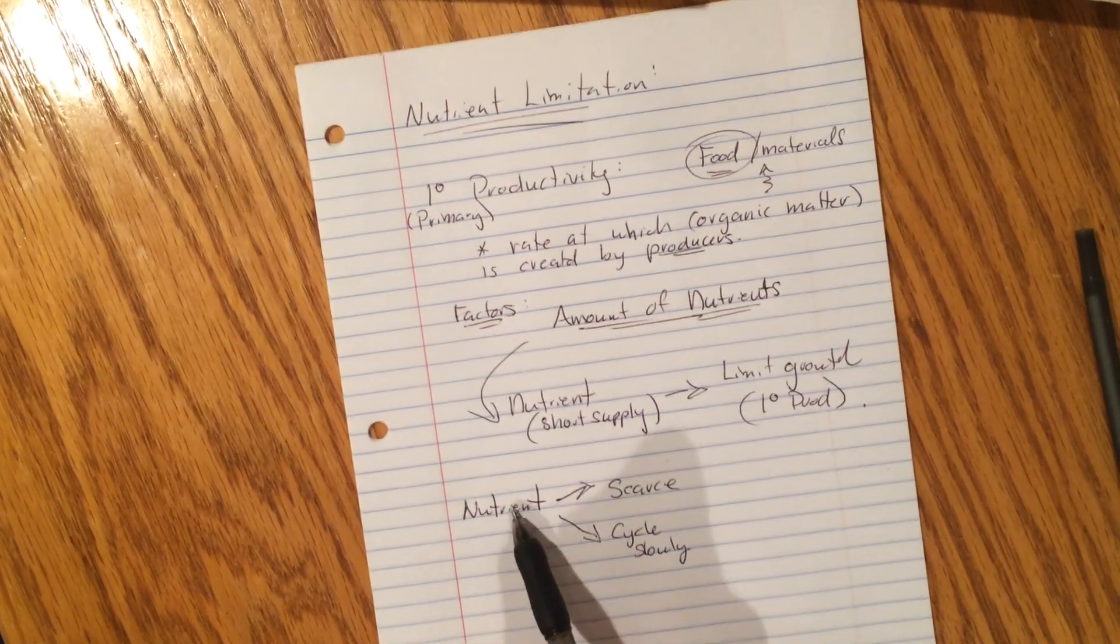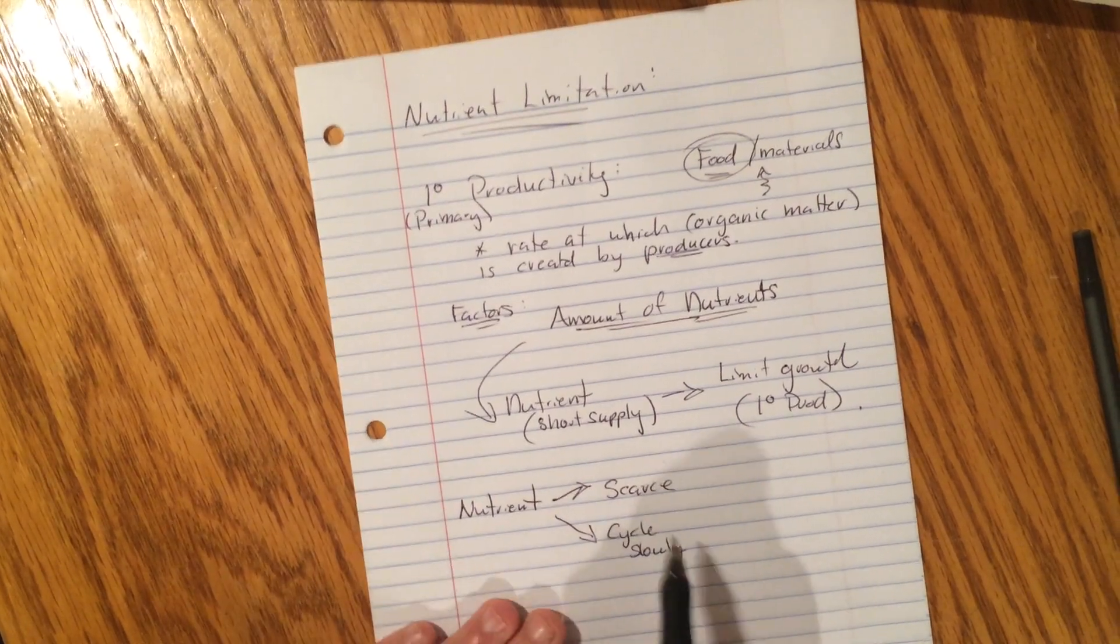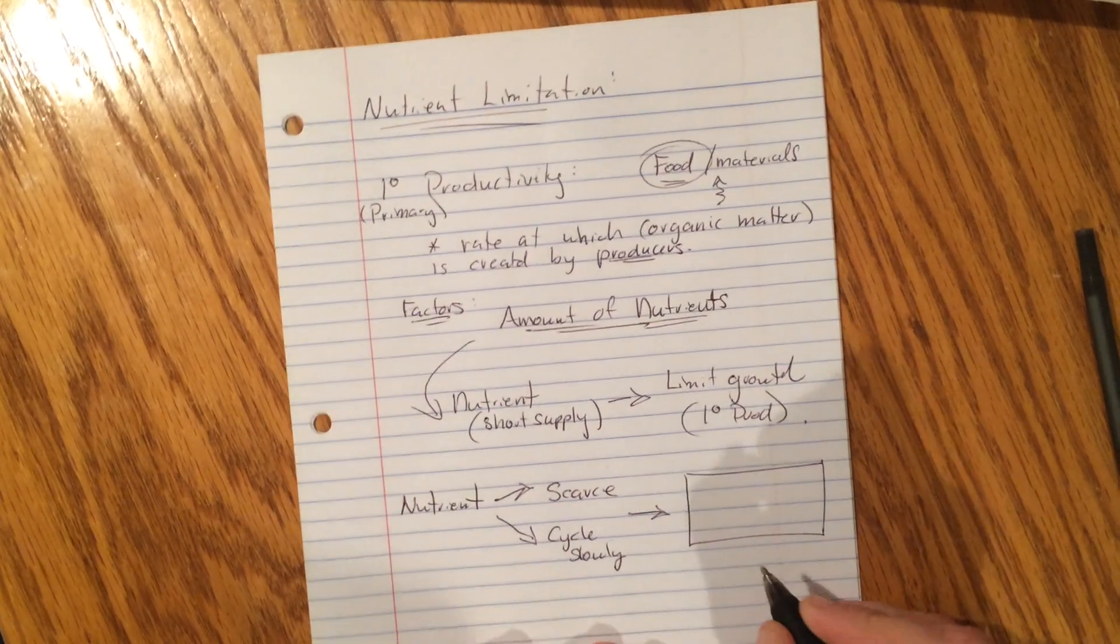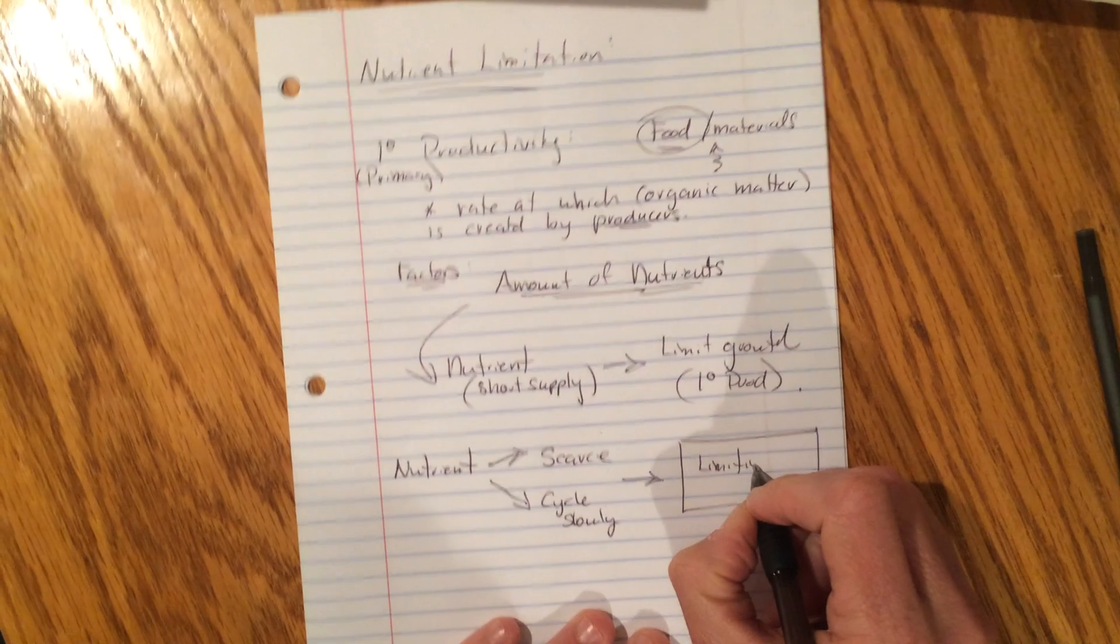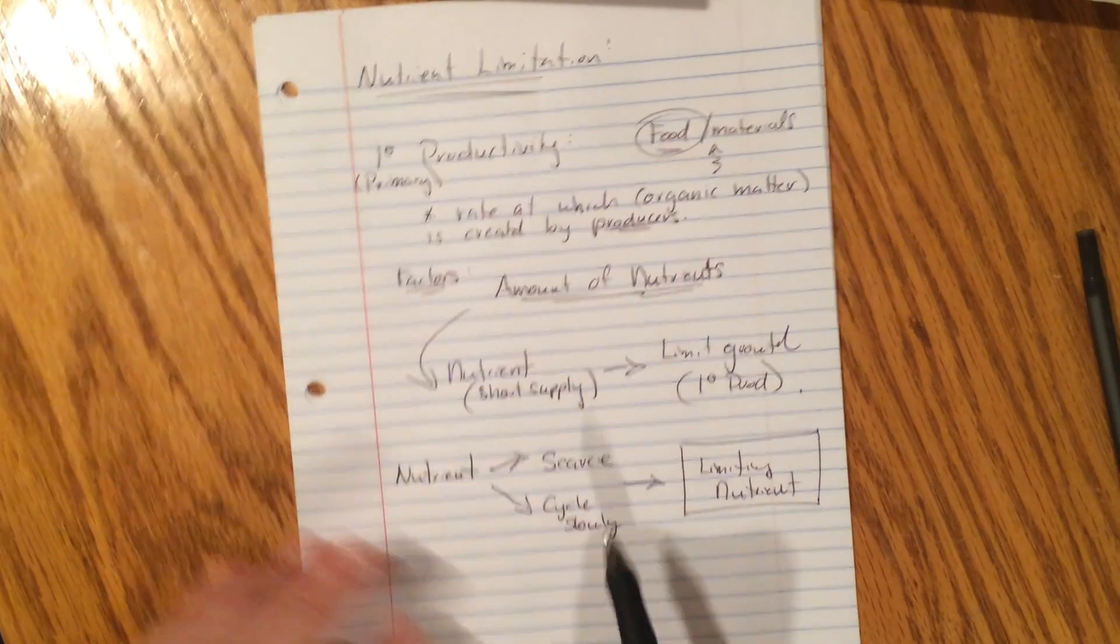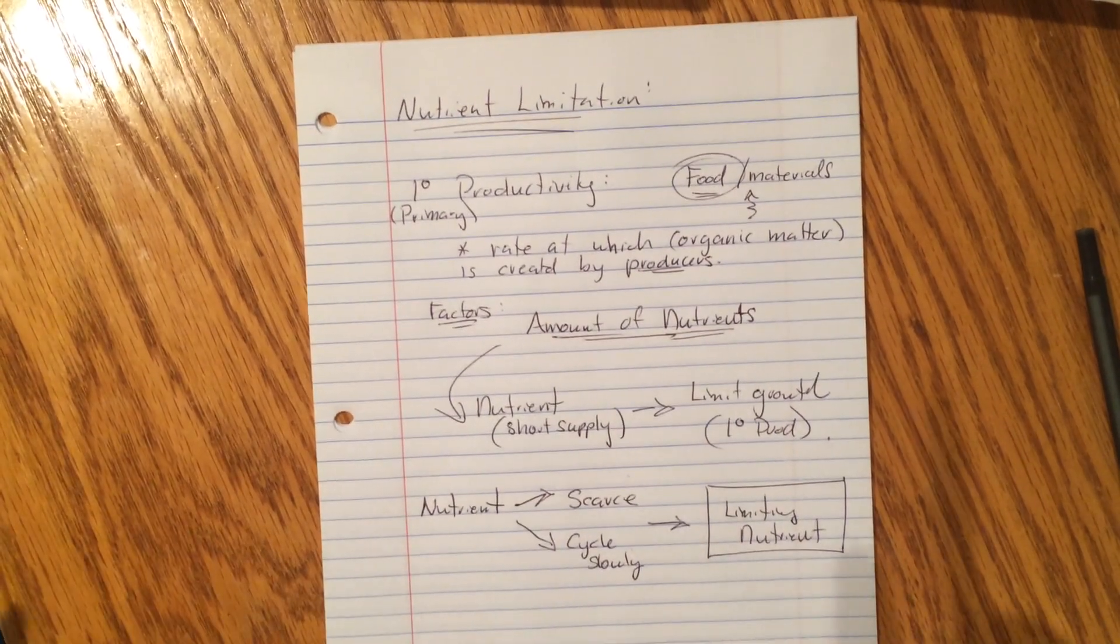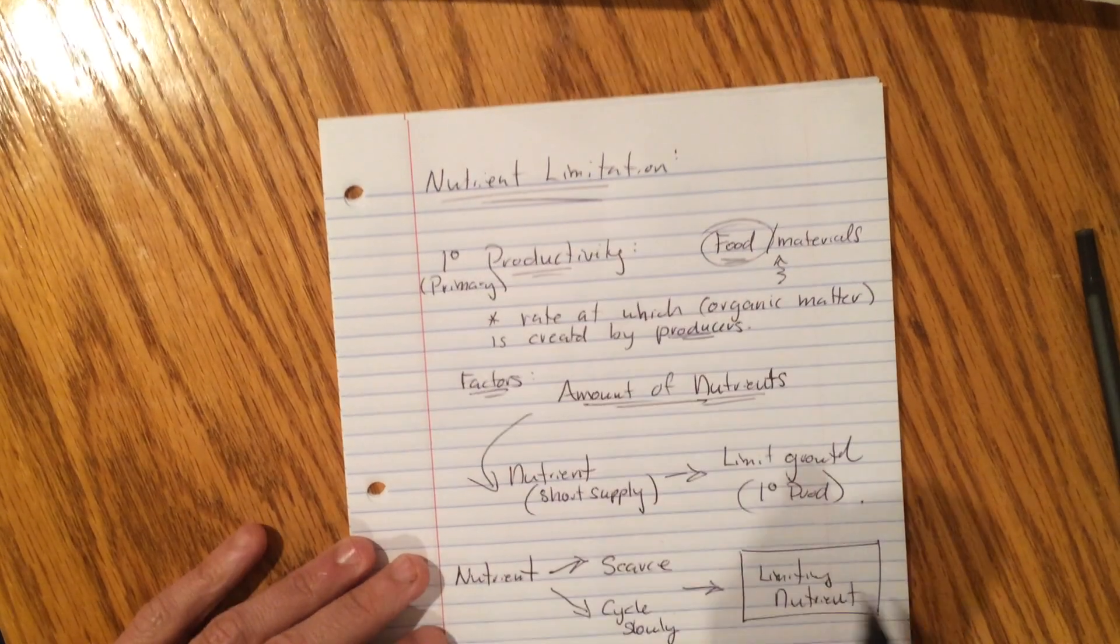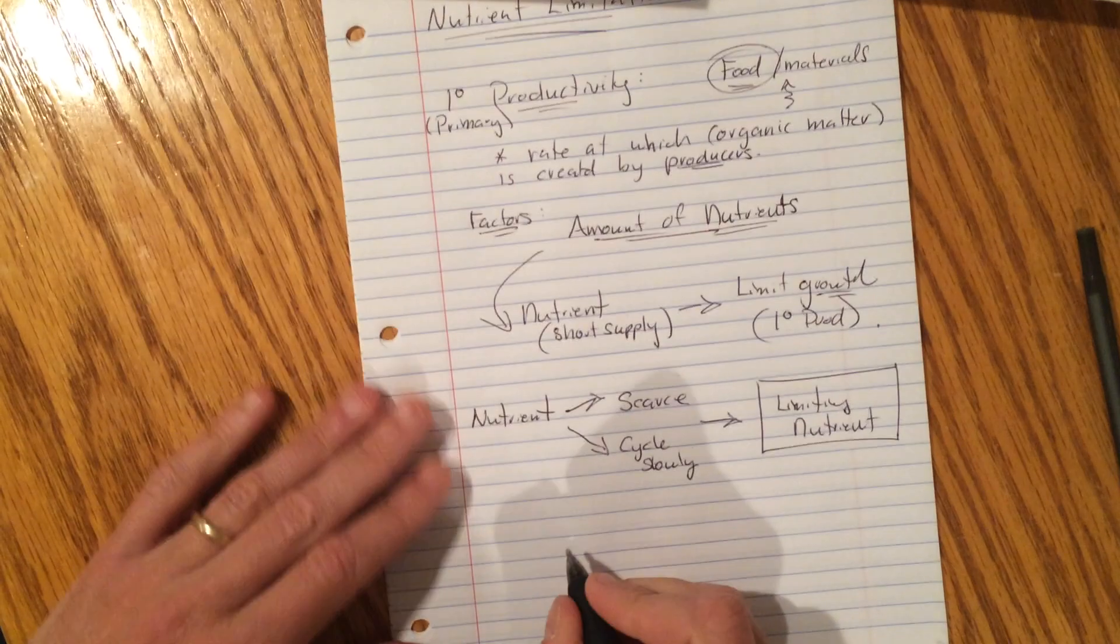And if you guys go back and look at some of the cycles, you can see they're pretty complex and take a lot of time. If a nutrient is scarce or cycles slowly, or even worse, both, then that nutrient, put this in a box, this is important, is then called a limiting nutrient, and then can affect the amount of productivity. Now, in this intro here, I've made it sound like you can only slow it down, but primary productivity, in terms of growth, can also be accelerated. So let's take a look at an example.